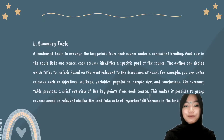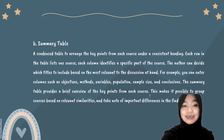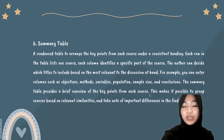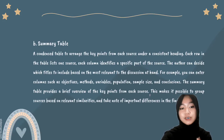Option B is a summary table to extract the key points from each source under a consistent heading. Each row in the table is one source, and each column identifies a specific part of the sources. The author can decide which titles to include that are most relevant to the discussion at hand. For example, you can enter columns such as objectives, methods, variables, population, sample size, and conclusion. The summary table provides a brief overview of the key points from each source, making it possible to group sources based on relevant similarities and take note of important differences in the findings.